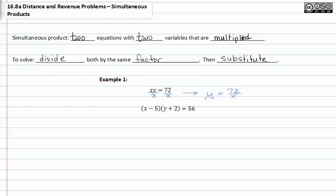Now that we know that we have solved for y, we can take the second equation and again solve for y. We do this by dividing both sides by x minus five. This gives us y plus two is equal to fifty-six over x minus five.